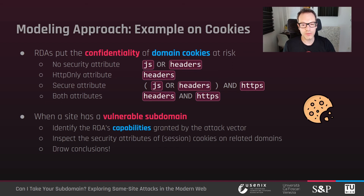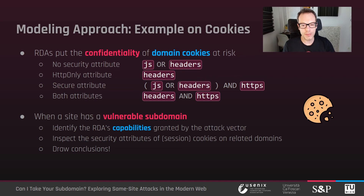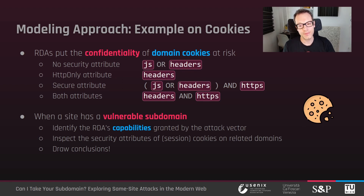The methodology we followed consists of three main phases. Given a site with a vulnerable subdomain, we identify the capabilities granted by the specific attack vector required to perform the takeover. Then we scan up to 200 domains of the vulnerable subdomain and collect cookies using a heuristic to identify potential session cookies. Having the concrete attacker capabilities and the cookies with their security attributes, we can draw conclusions on potential confidentiality violations.